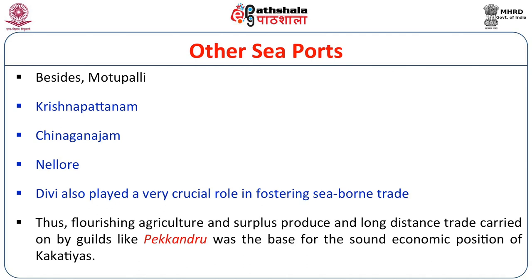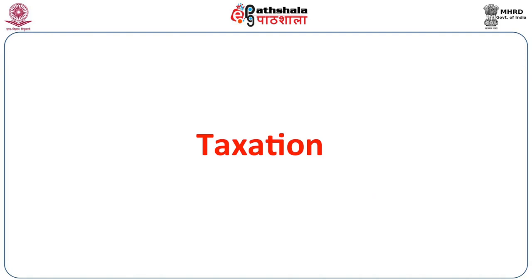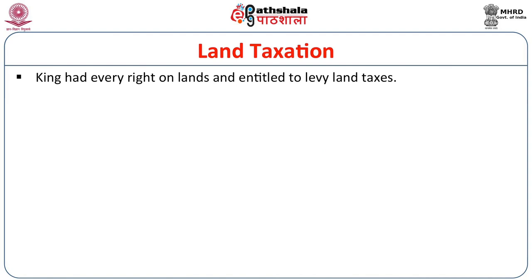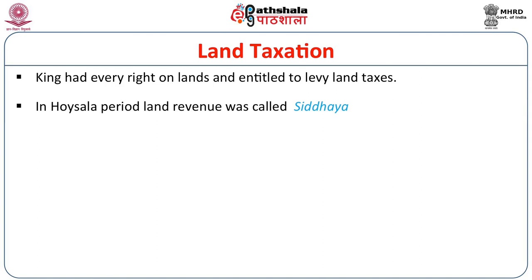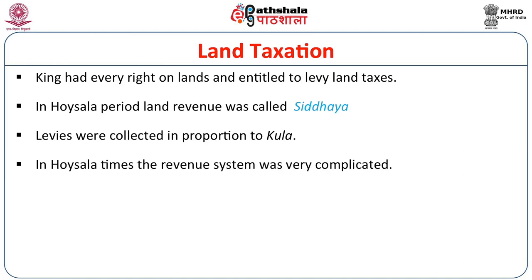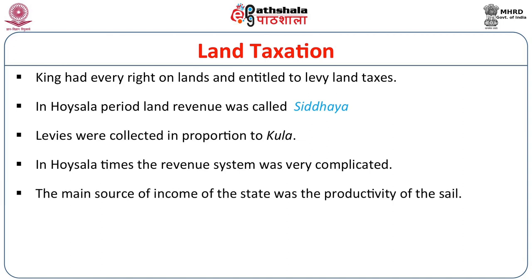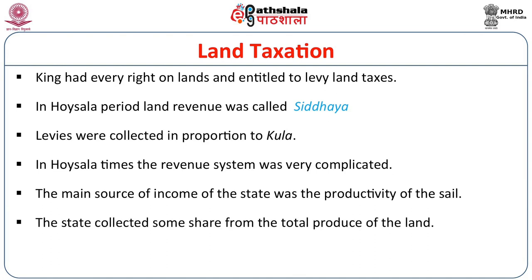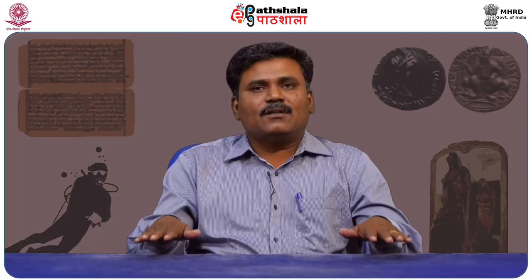Flourishing agriculture and surplus production of the Kakatiyas, Hoysalas, and Yadavas of Devagiri led to significant economic changes during those dynastic periods. We will now discuss the taxation policies of the Hoysalas, Yadavas, and Kakatiyas. In taxation policy, land tax played a vital role. The king had every right over lands and was entitled to levy land taxes. In the Hoysala period, land revenue was called Siddhaya, and levies were collected in proportion to Kula. The Hoysala revenue system was very complicated, and the main source of income was the productivity of the soil.